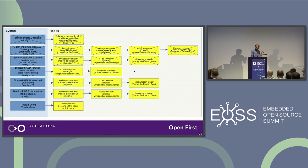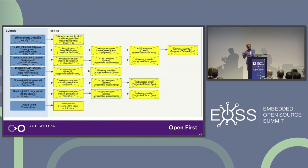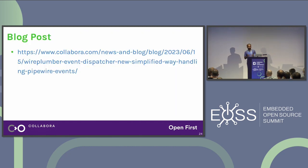After all the events are processed and all the needed PipeWire signals for the Zoom app playing and recording are in place, it's time to link them. Linking is done and the rescan event is complete. We have a blog post with in-depth details if you're interested.